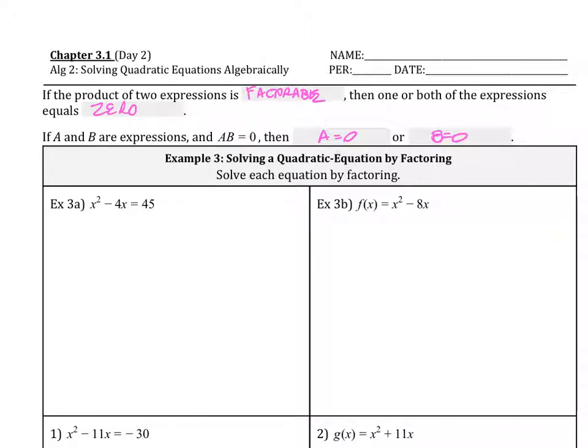So we're going to solve each equation by factoring. In these cases, we want to always set it equal to zero first. The other thing we can notice is that our A value is one. So let's set it equal to zero first. For example 3A, it's not set equal to zero, so let's subtract 45 from both sides.